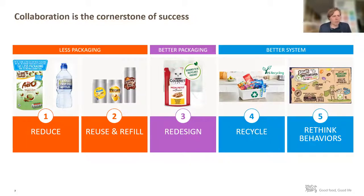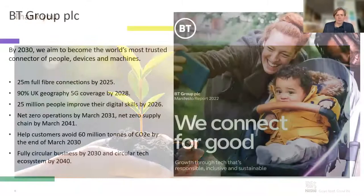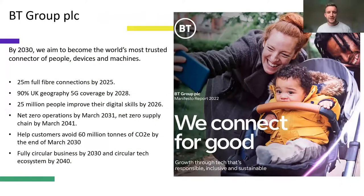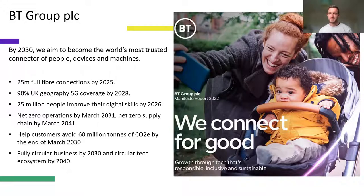Steve encourages audience to keep questions coming and voting. He introduces the final intervention from Matt Manning, head of circular economy at BT Group. Matt explains BT is a global telecoms company operating brands including BT, EE, Plusnet, and Openreach — a wholly owned subsidiary doing fiber connections across the UK. By 2030, BT aims to be the most trusted connector of people, devices, and machines, with big ambitions for fiber rollout and 5G coverage.